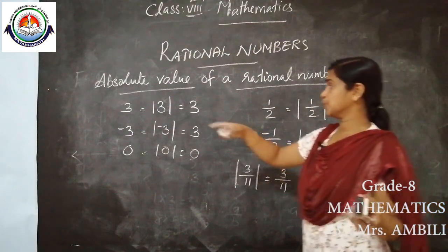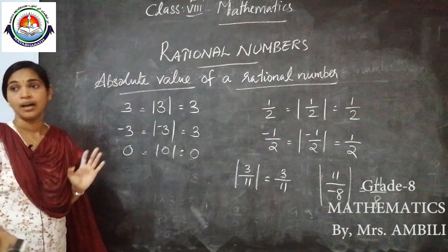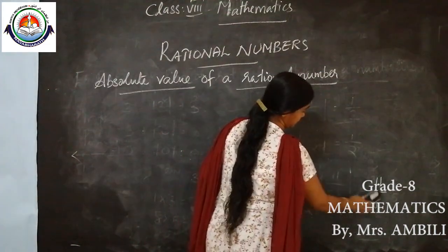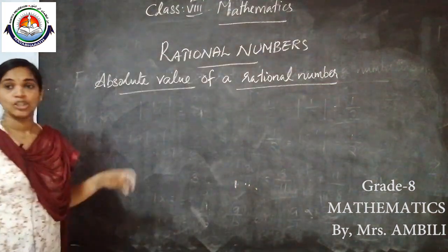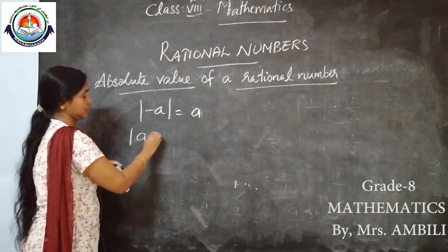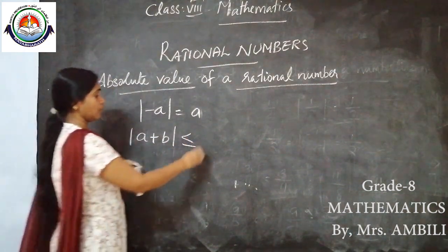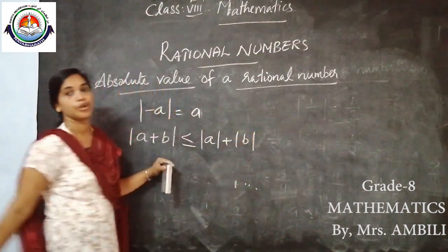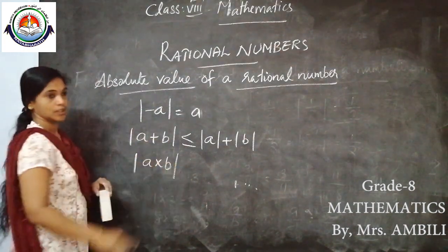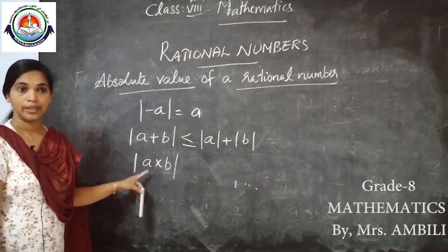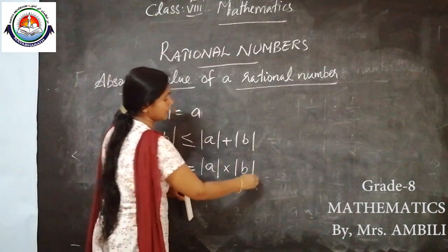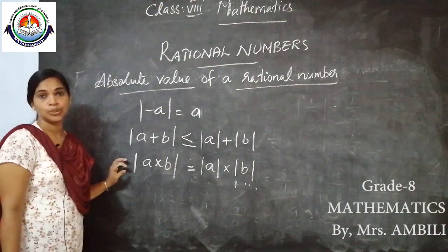There are also some properties of absolute value of a rational number. First: |−A| = A. Second: |A + B| ≤ |A| + |B|. Third, for products: |A × B| = |A| × |B|. These three properties we need to study.